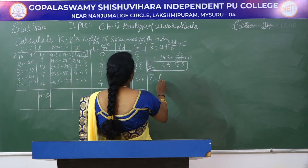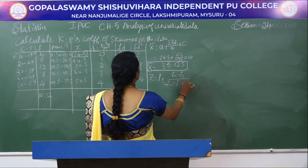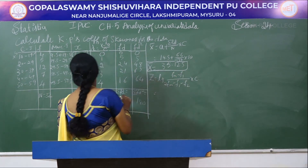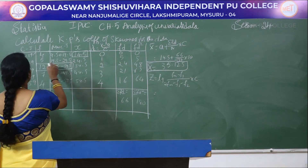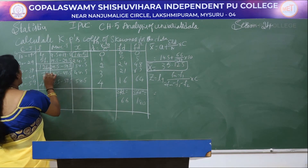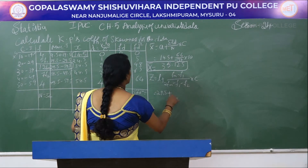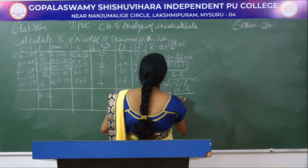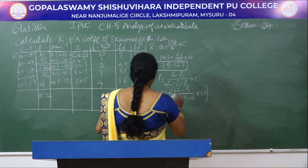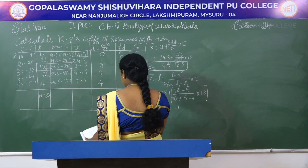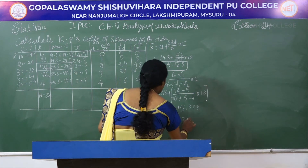Next, find the mode z using: z = l + [(fm − f1) / (2fm − f1 − f2)] × c. The highest frequency fm = 12. The modal class lower boundary l = 29.5, f1 = 5, f2 = 7, c = 10. So z = 29.5 + [(12 − 5) / (2×12 − 5 − 7)] × 10 = 29.5 + 5.833 = 35.333.